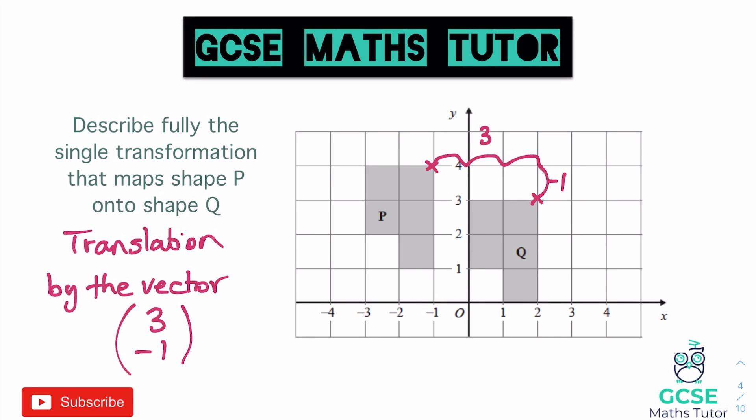Note that if the question asked how to get from Q to P instead, the vector would be different — minus three on top and positive one on the bottom, since you'd go three left and one up. It's very important to use the correct language: you must say the word "translation" — "moved" will not get the marks. You also need to give the vector, stating "by the vector" before writing it.